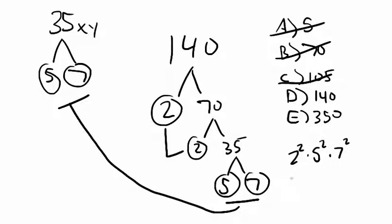35xy is going to be 2 squared times 5 squared times 7 squared. If you put that in your calculator, you'll figure out that equals 4,900. And boy, lo and behold, that is the square of an integer. Cool, right? All right. Thank you.